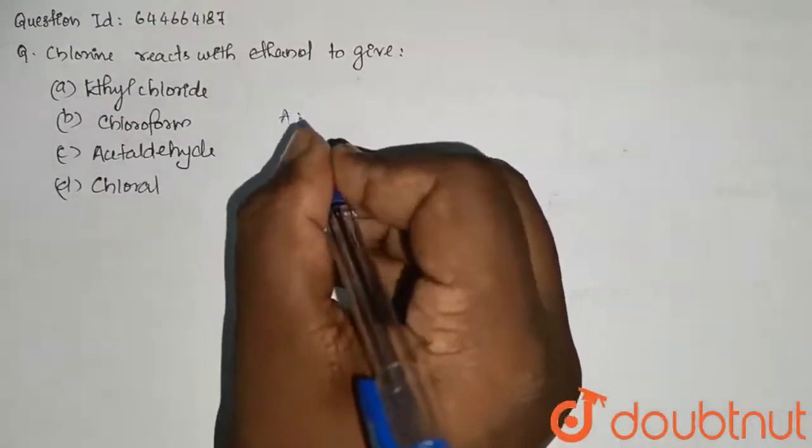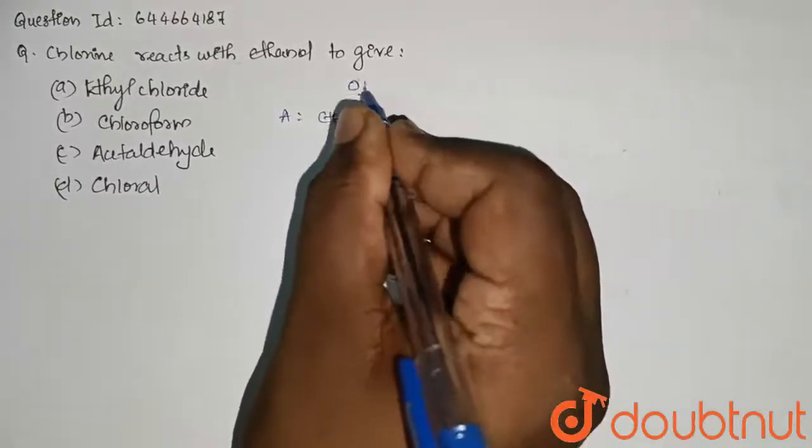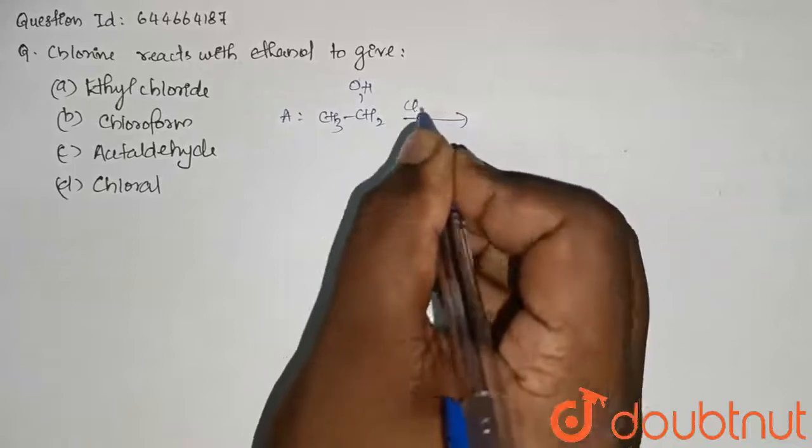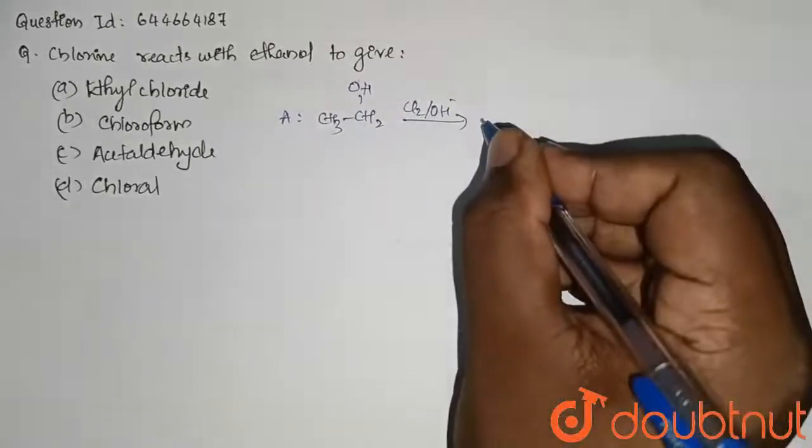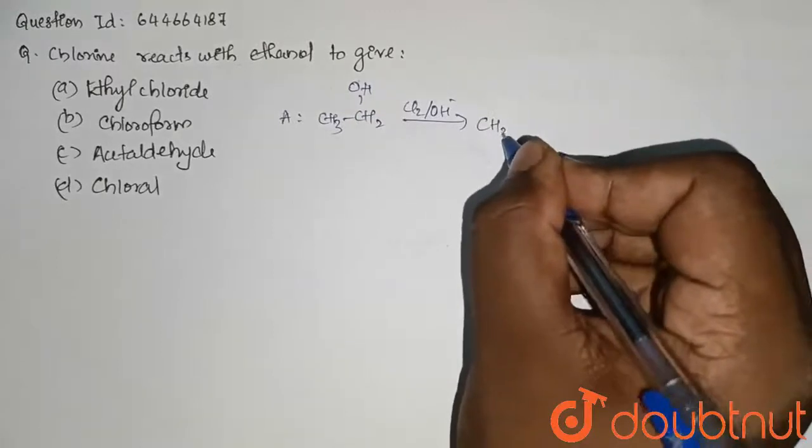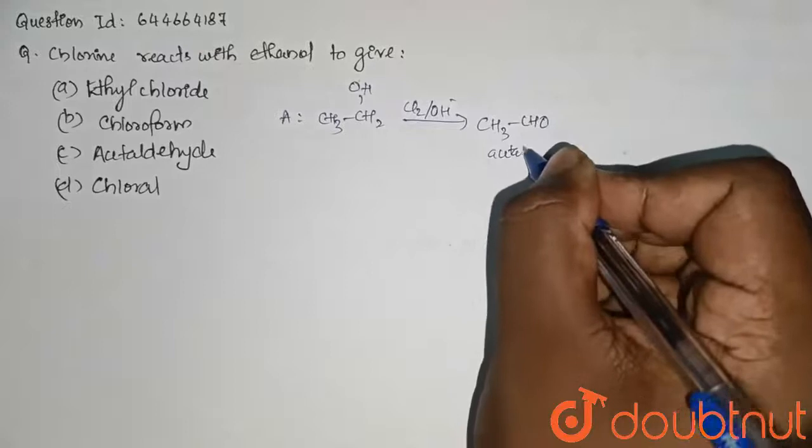As we know, ethanol is CH3CH2OH, right? So when it reacts with chlorine in the presence of a base, first it will give CH3CHO. So this is acetaldehyde.